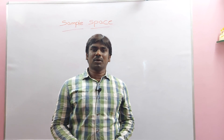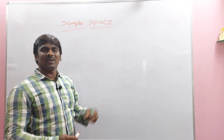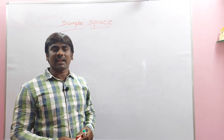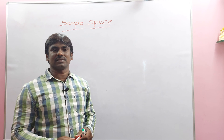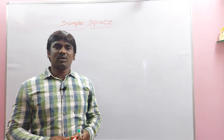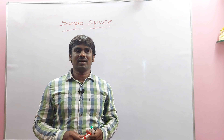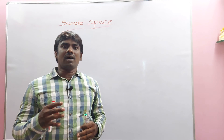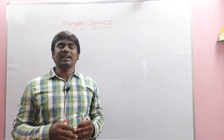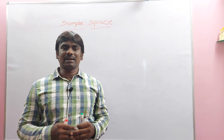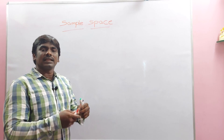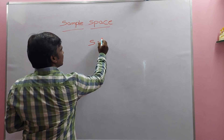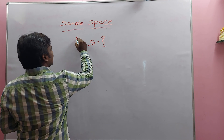Today's topic is sample space. What is sample space? A set of all possible outcomes in a random experiment is called sample space. A random experiment is one whose outcome is not known in advance. Sample space is denoted as capital letter S.